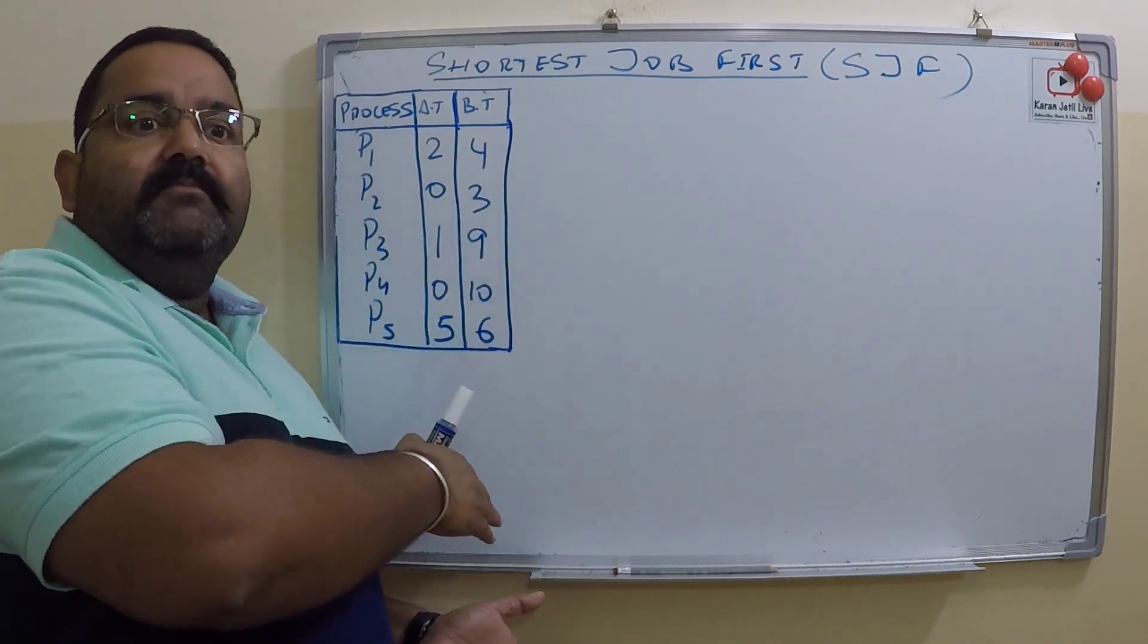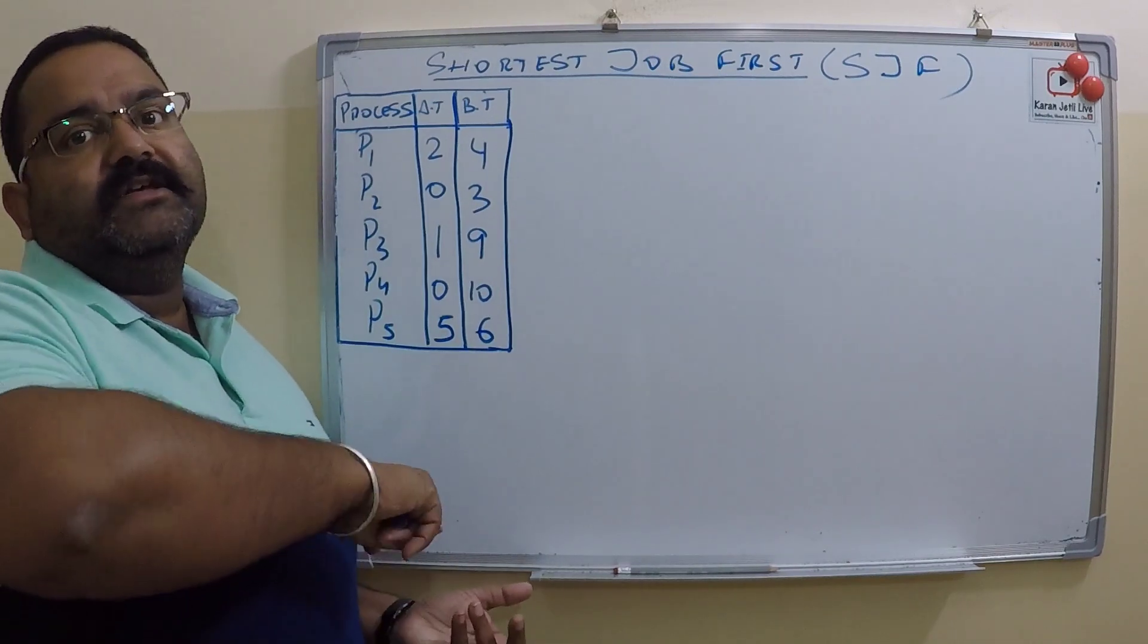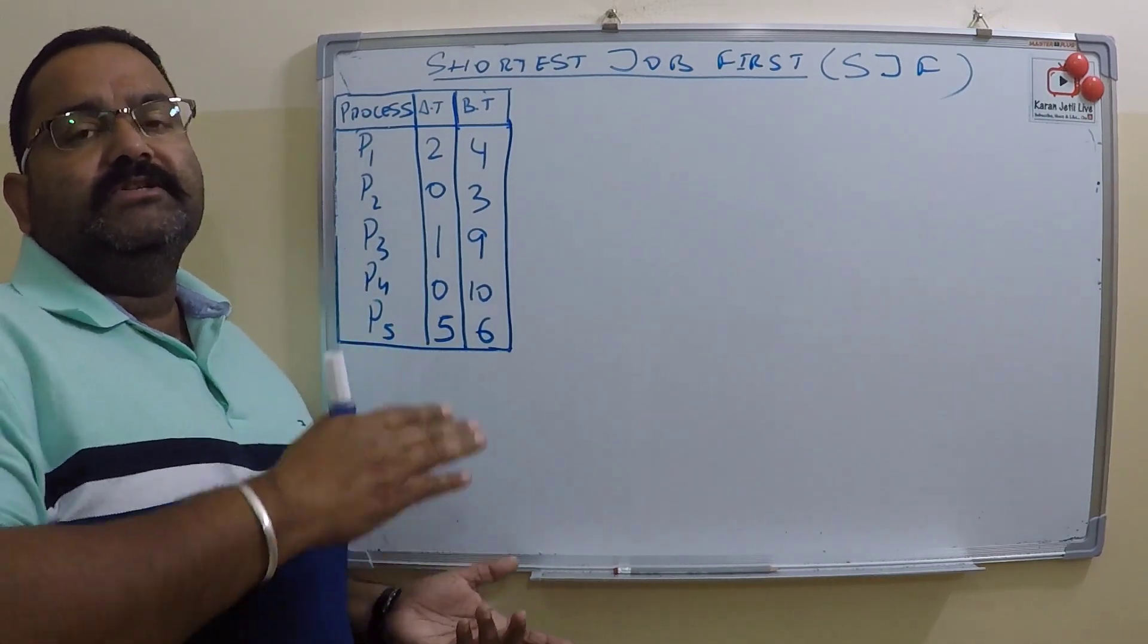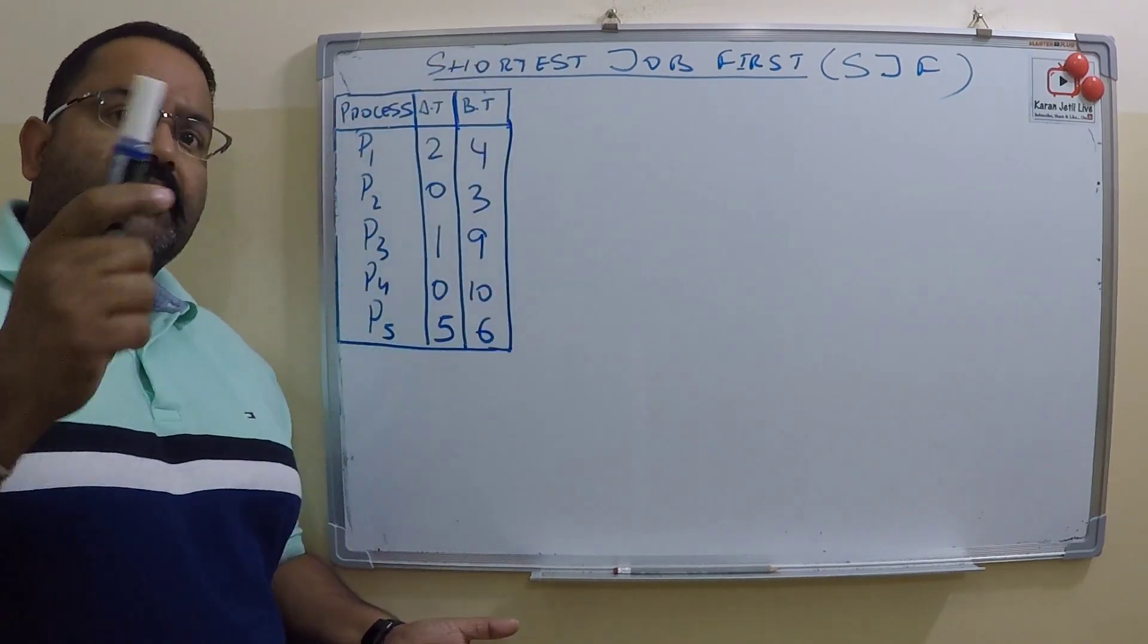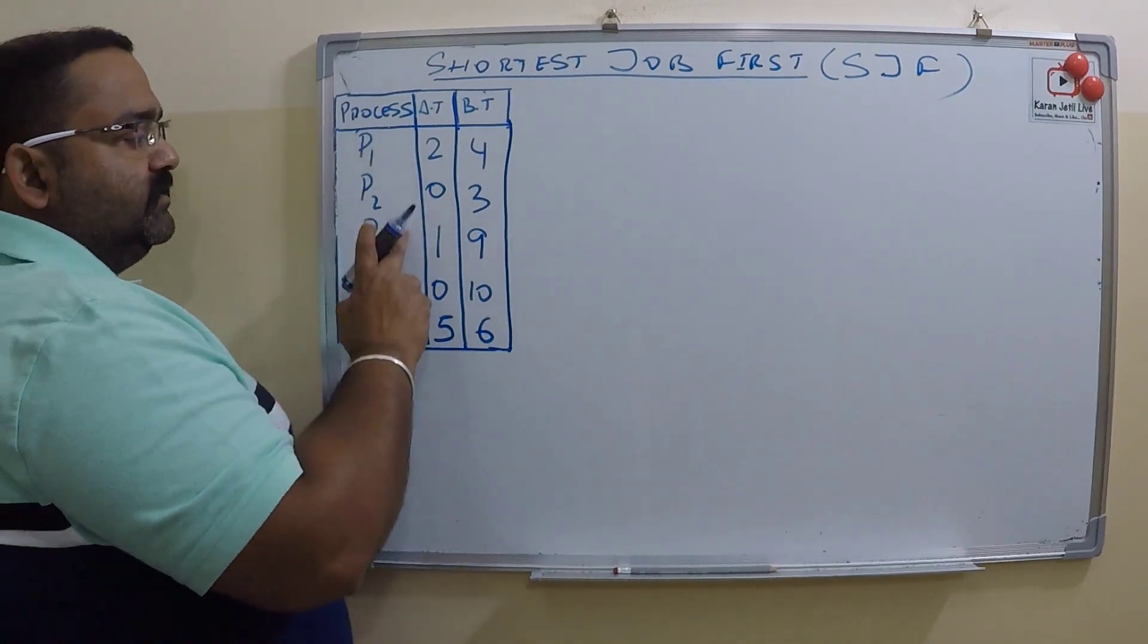The CPU will jump from this process to the another process. Let us do it. Now if you look at this, we have two processes, P2 and P4.